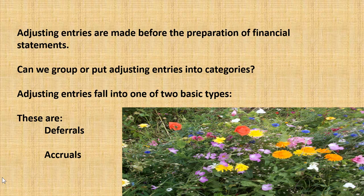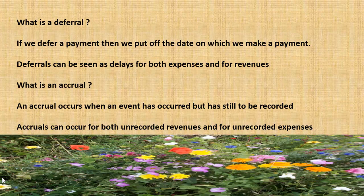Can we group the adjusting entries we make into categories? Well, they fall into two basic types: deferrals or accruals, and they're very simple to explain. A deferral is when we put off making a payment, so we can have deferrals for expenses and we can also have deferrals for revenues.